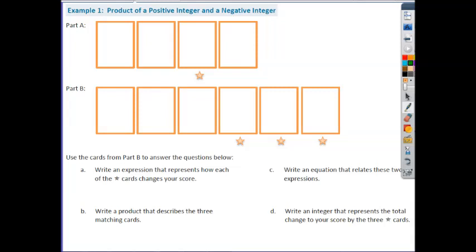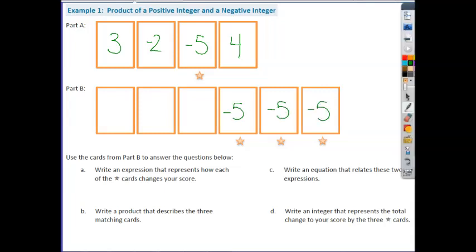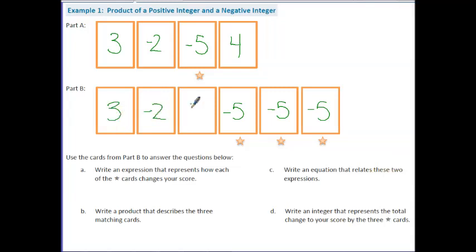What's different about this integer game is when we pick our cards, the card that has the star underneath it is going to be repeated three times. Notice it's repeated addition, which is the same thing as multiplication. For example, I pick up a 3, a negative 2, then a negative 5, then a 4. In this case, it's the negative 5 that is going to be repeated three times — so I'll have negative 5, negative 5, and negative 5. We'll put the other cards over here: a 3, a negative 2, and a 4.